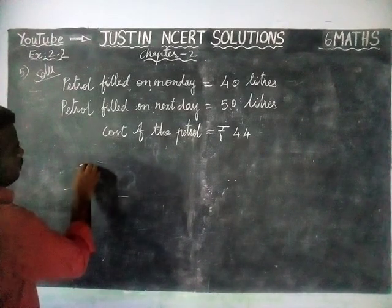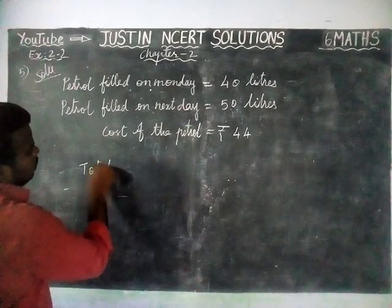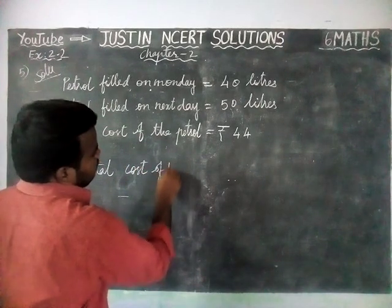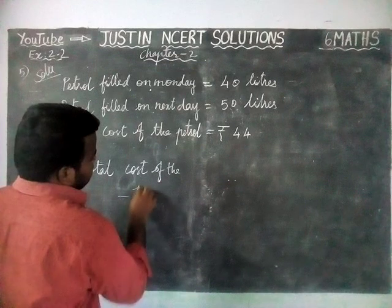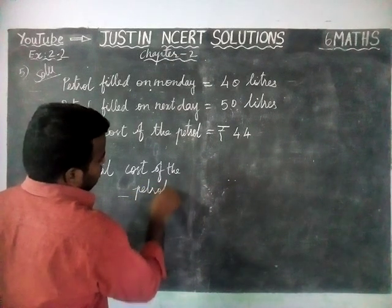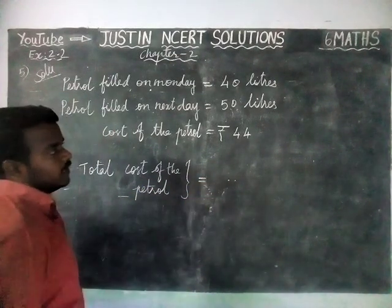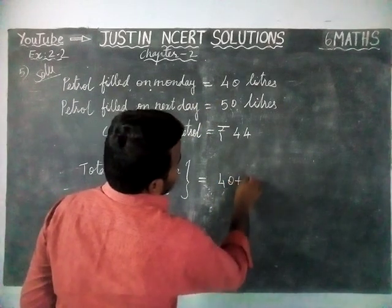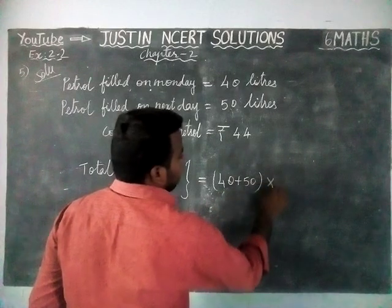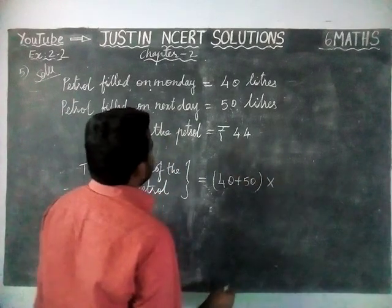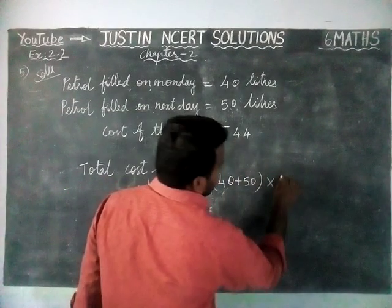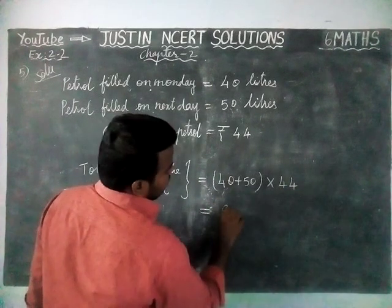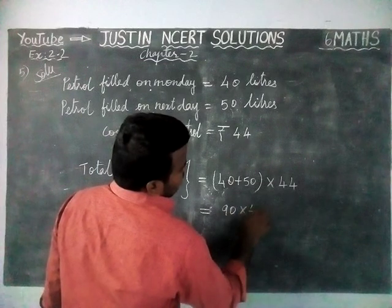Now we have to find the total amount, that is total cost of the petrol. Total cost equals (40 plus 50) multiplied by the cost per litre, which is 44. We can add 40 plus 50 to get 90, so it becomes 90 into 44.